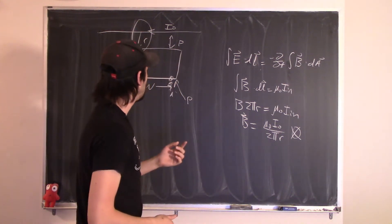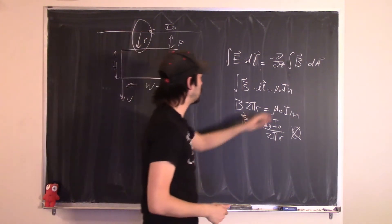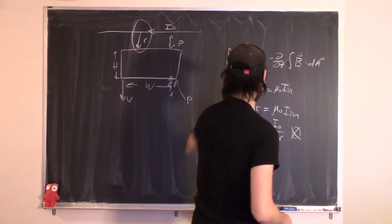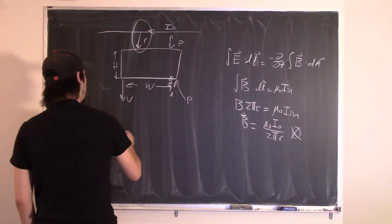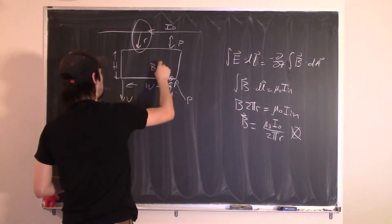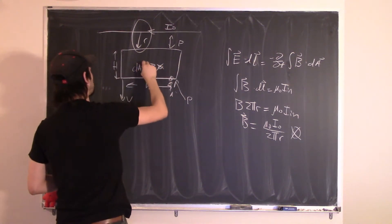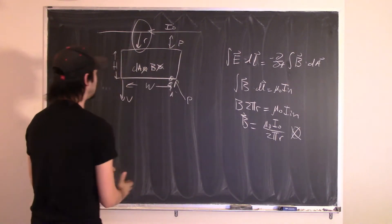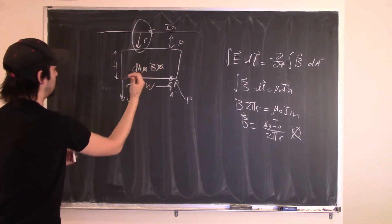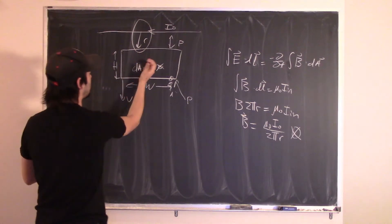Now that we have this magnetic field, we want to evaluate Faraday's Law. Because B points out, I choose dA to also point out. Using the right-hand rule: thumb in the direction of dA, curl in this direction — that tells me that dL goes around like this, and that's also the direction of my current.